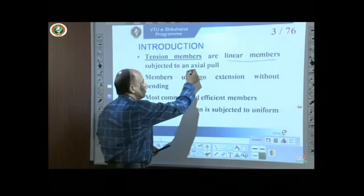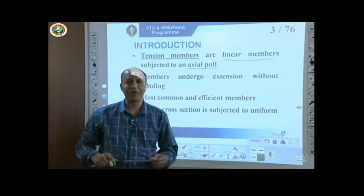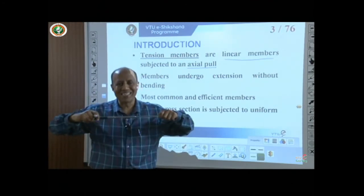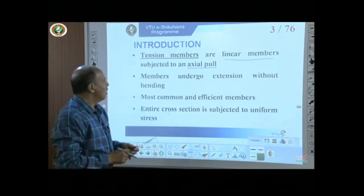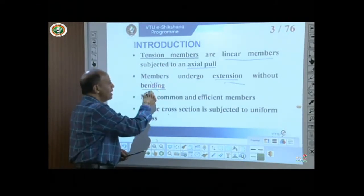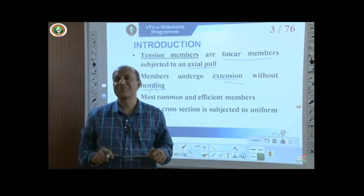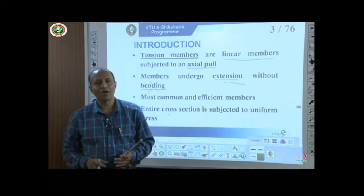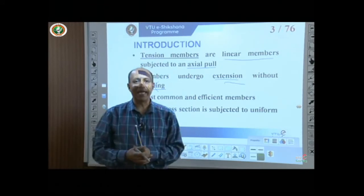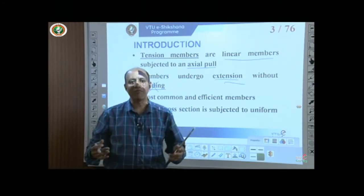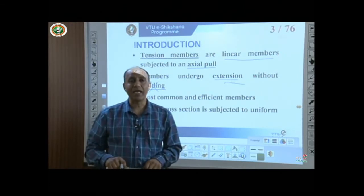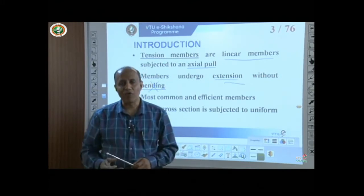These members are subjected to an axial pull — an axial force which passes through the centroid of gravity — and this axial pull tries to extend or deform the bar. When subjected to this axial force, the member undergoes extension without bending. This type of member is most efficient because the entire cross-sectional area resists the axial force, meaning uniform stresses develop over the entire cross-section.